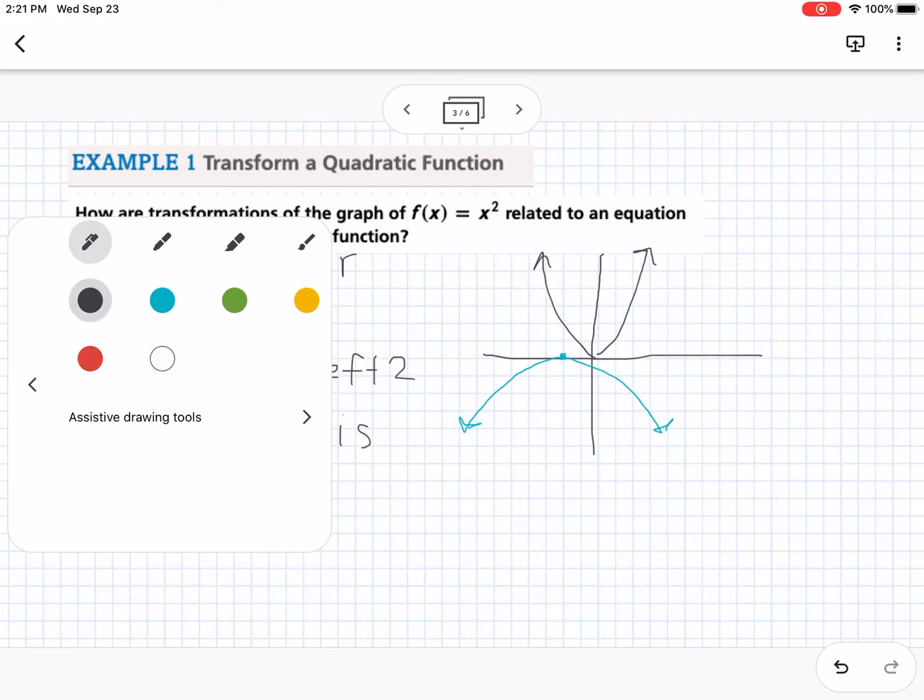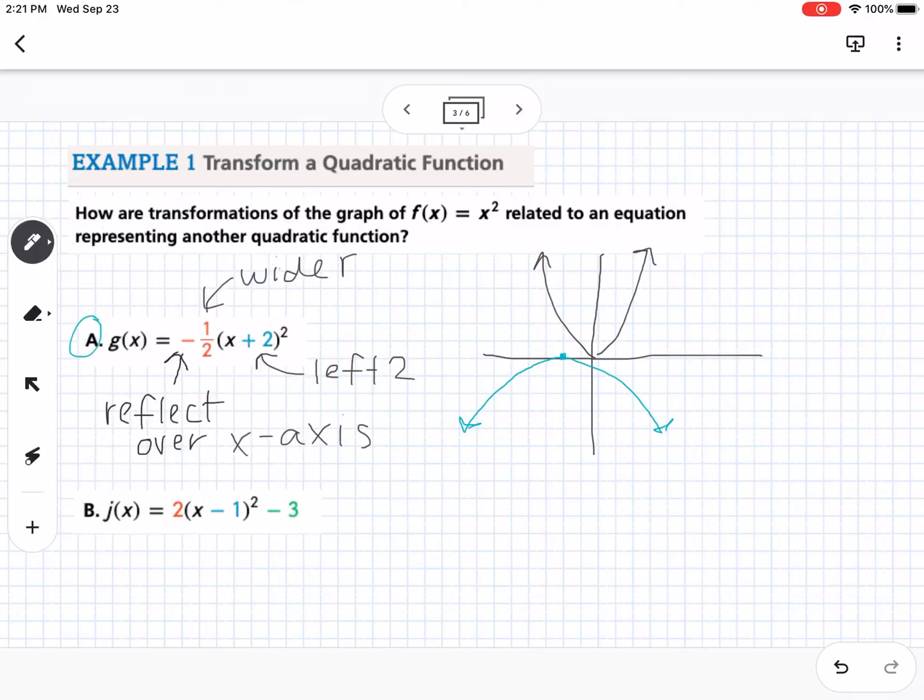Our next one says we have a two out front, so this is going to make it narrower, or we could say vertical stretch. This minus one inside is going to shift it to the right one, and the minus three outside is going to shift it down three.